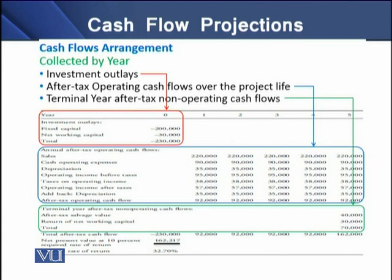Then we have terminal year after-tax non-operating cash flows, or simply terminal cash flows. These occur at the end of the project's life when the assets of the project are disposed of. These cash flows are related to the sale proceeds of the fixed assets of the project, and they also occur as a result of the disposal of working capital.